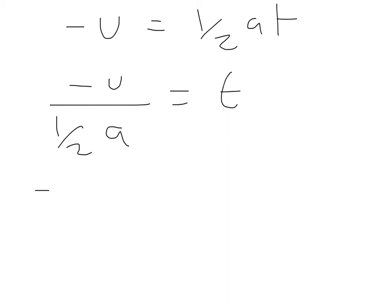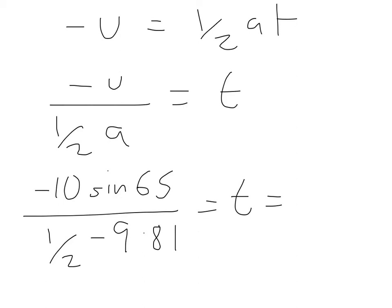So eventually we're going to end up with minus U divided by one half A equals T. Now I know that U was 10 sin 65 divided by one half of minus 9.81, which will give me a negative divided by a negative, which equals T. Now if I work that out, that is equal to, so that actually gives me 1.84 seconds. So we now know the time of flight, which means we can solve the equation in both dimensions now.